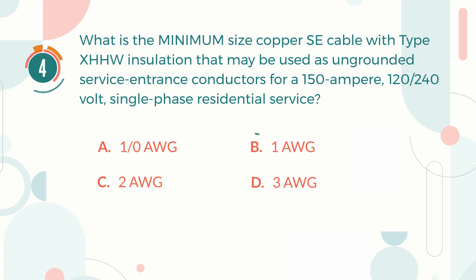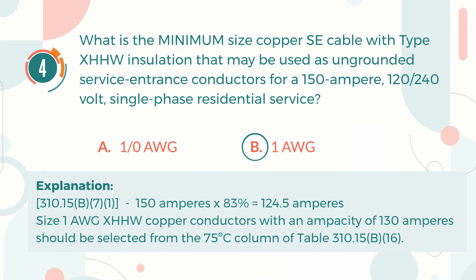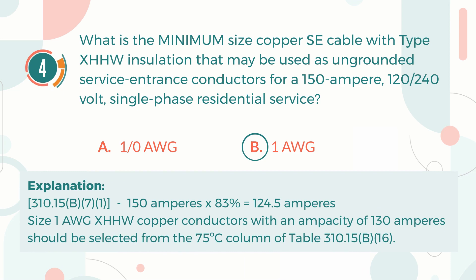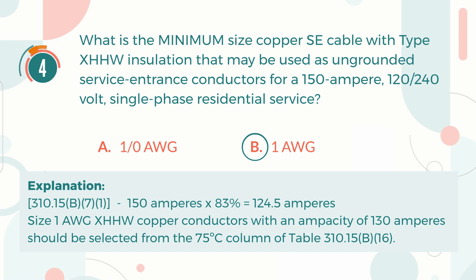The correct answer is B. 1 AWG. Explanation: According to Section 310.15(B)(7), the demand current is calculated as 124.5 Amperes. Hence, size 1 AWG XHHW copper conductors with an ampacity of 130 Amperes should be selected from the 75 degrees Celsius column of Table 310.15(B)(16).